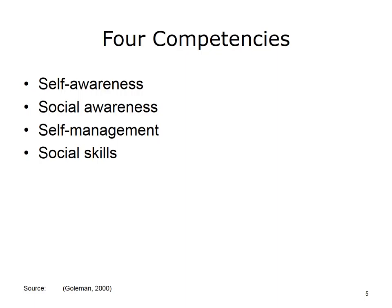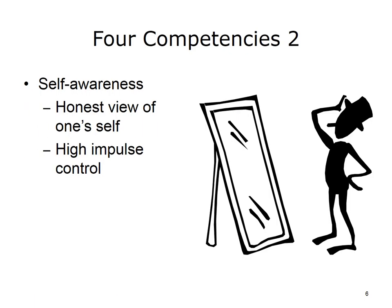Goldman suggests that there are four competencies in social intelligence. These are self-awareness, social awareness, self-management, and social skills. Let's look at each of these in detail.